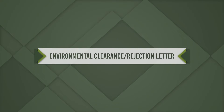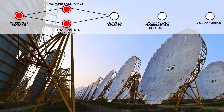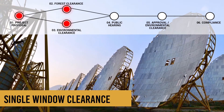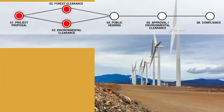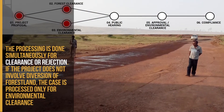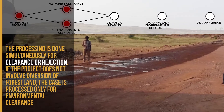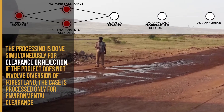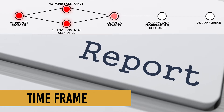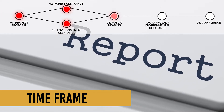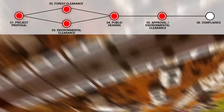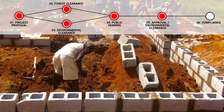The Environmental Clearance and Rejection Letter Procedure is based on single window clearance. When a project requires both environmental clearance as well as approval under the Forest Conservation Act 1980, proposals for both are required to be given simultaneously to the consent divisions of the Ministry. The processing is done simultaneously for clearance or rejection. If the project does not involve diversion of forest land, the case is processed only for environmental clearance. Regarding the timeframe: once all requisite documents and data from project authorities are received and public hearings have been held, assessment and evaluation of the project is completed within 90 days, and the decision of the Ministry shall be conveyed within 30 days thereafter, totaling 120 days from the date of application.